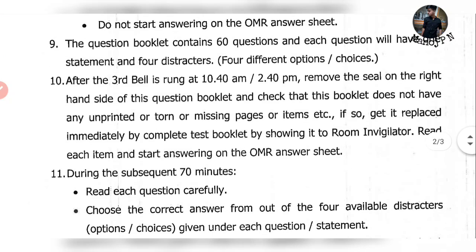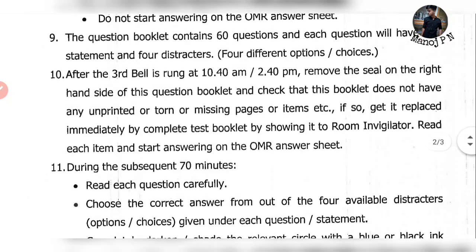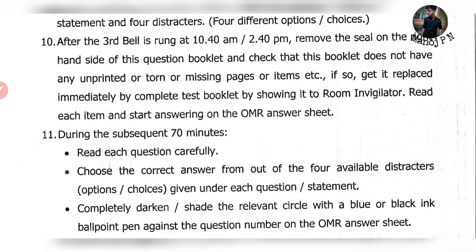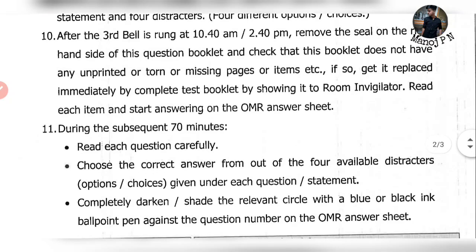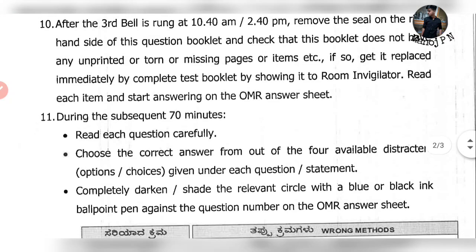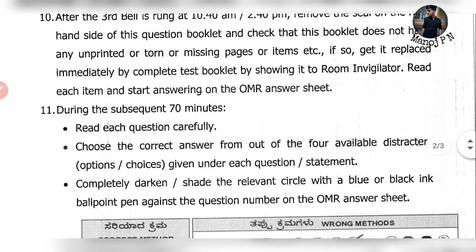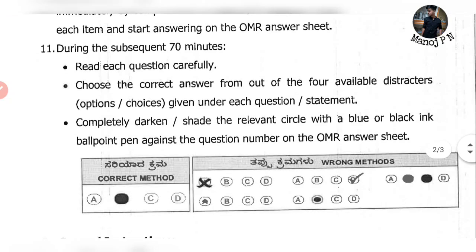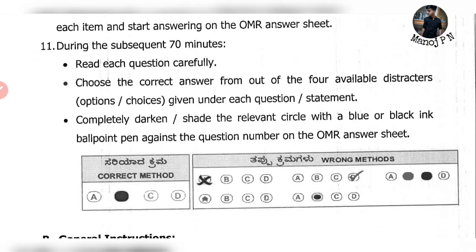We will make the question book available. Your questions are taken from the question book and there are many distractors. At the third bell at 6:40 a.m., another person can open the paper. You will see the preferences on your paper. You will see how you have to inform the room invigilator. The duration is about 70 minutes — 10 minutes for instructions and 60 minutes for the paper.